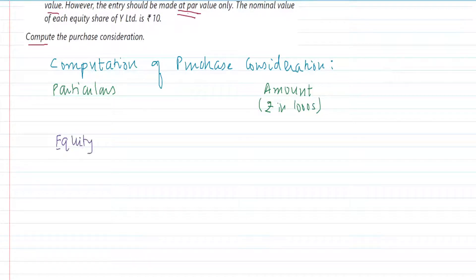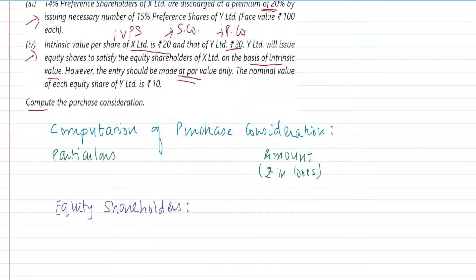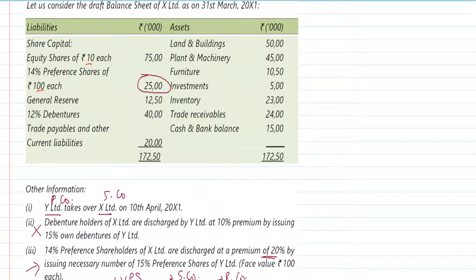We first consider what we are paying to the equity shareholders. Looking at the balance sheet, the equity share capital is 7,500. The shares are of rupees 10 each, which means there are 750 equity shares. The share exchange ratio is going to be based on IVPS.